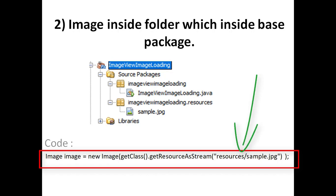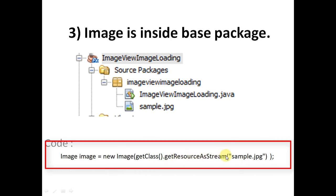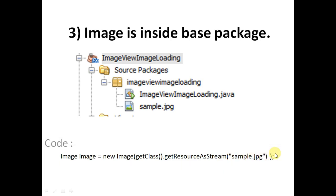In the third scenario, the image is inside the base package — suppose you have placed the image without any folder, just adjacent to the controller file or your Java class. In that case you can directly load your image using getClass().getResourceAsStream() and simply pass the name of the image. No need to give any slash or forward slash — only give the name of the image.